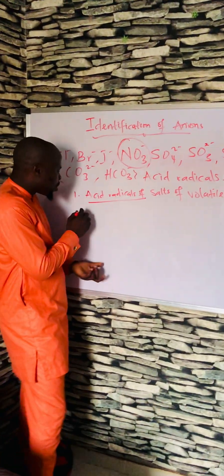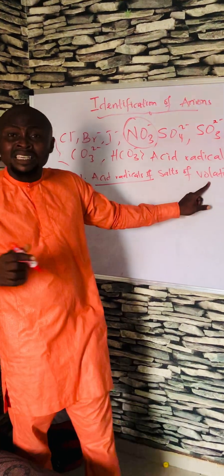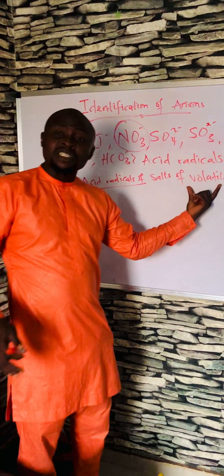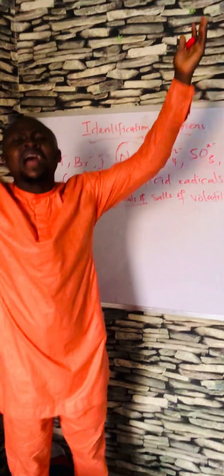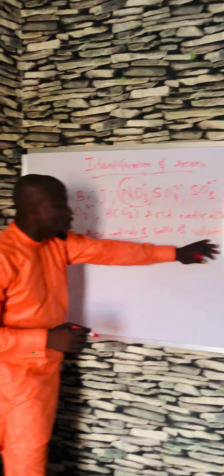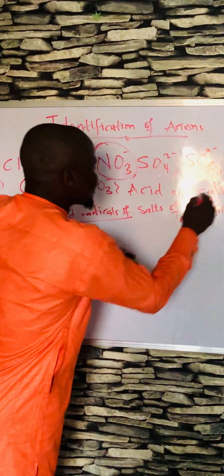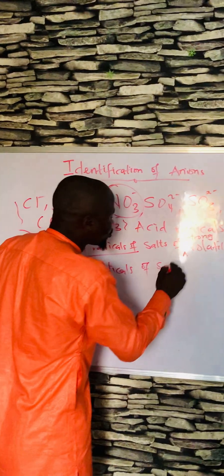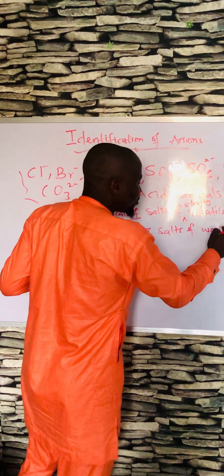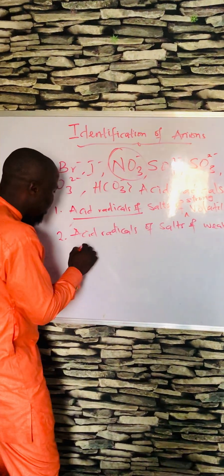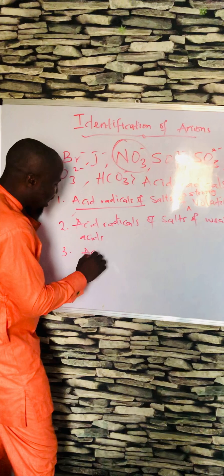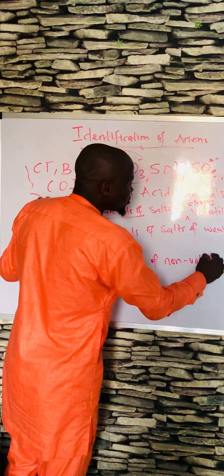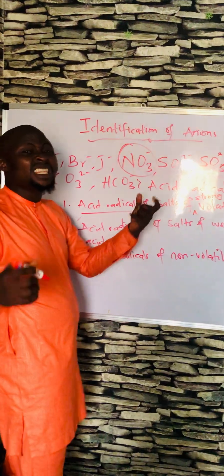So, of volatile acids. Volatile acids — note that volatility of an acid is not the same thing as the strength of an acid. Volatility simply means the ability of an acid to vaporize easily. So we have: acid radicals of salts of strong volatile acids, acid radicals of salts of weak volatile acids, and lastly, acid radicals of non-volatile acids — acids that cannot easily vaporize.